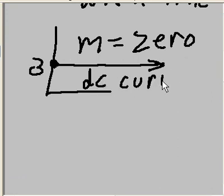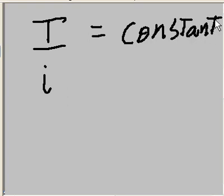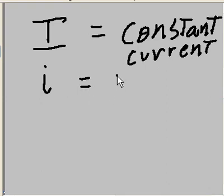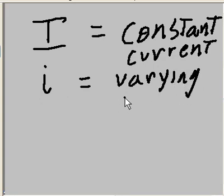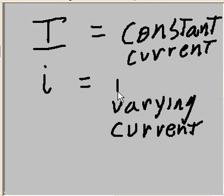DC current. All right. We usually use the symbol I to represent a constant current. Now, there's another symbol that's used for varying current. Varying current is usually represented by lowercase i. It varies with time, so we call it time-varying current.